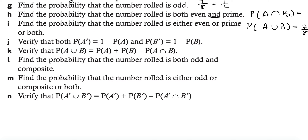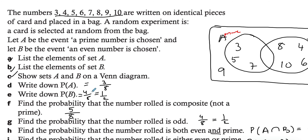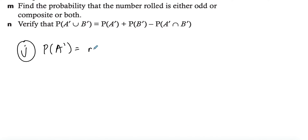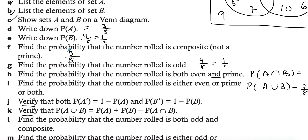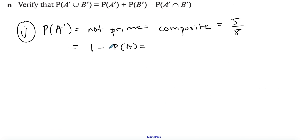For part J, they want you to verify that P(not A) equals one minus P(A). Not A means not a prime number, i.e., composite. We already found the probability of composite to be five over eight. We want to show this equals one minus P(A). Since P(A) is three over eight, we compute one minus three over eight, and plugging this into the calculator gives five over eight — the same answer.